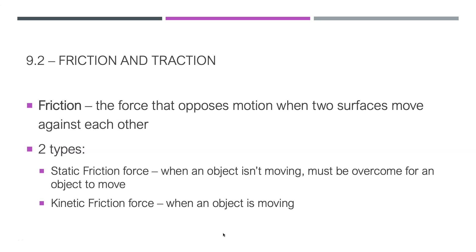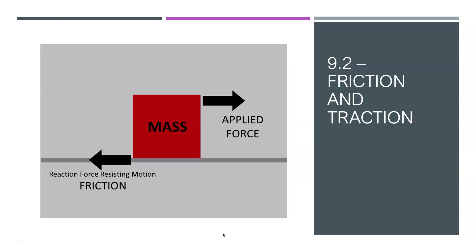First is friction — that is the force that's going to oppose motion, only present when two surfaces are moving against each other. There are two different types: static and kinetic. Static means not moving, kinetic means moving. So when an object is moving, it has kinetic friction; when it is not moving, it has static friction.